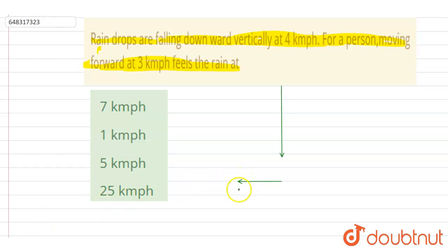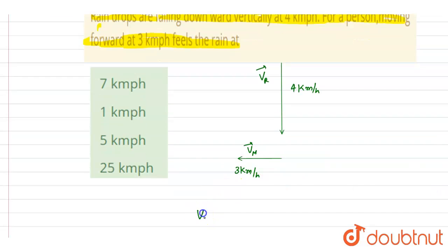So we want the speed of the rain with respect to the man. This is vr vector, and this is vm vector. So if I write down the velocity of the rain with respect to man, it